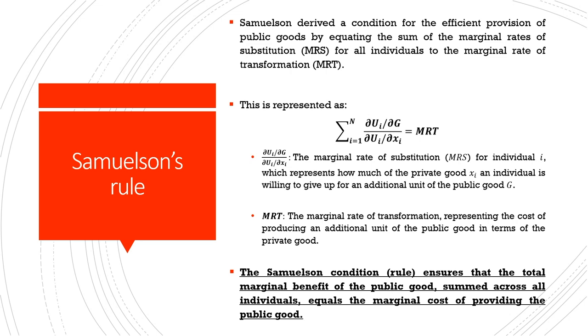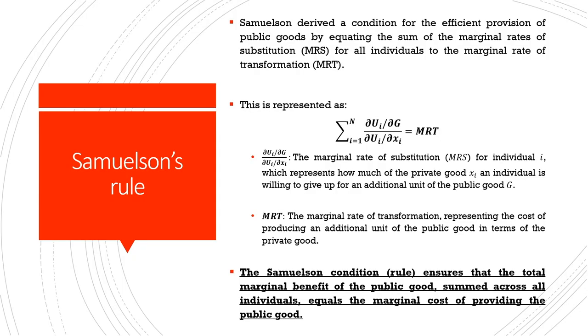Based on this understanding of public goods, Samuelson also came up with an optimal condition for provision of these goods, now known as the Samuelson rule or Samuelson condition. He derived a condition for the efficient provision of public goods, which is also where we discuss efficiency and equity considerations in public policies. Samuelson equates the marginal rate of substitution for all individuals to the marginal rate of transformation.